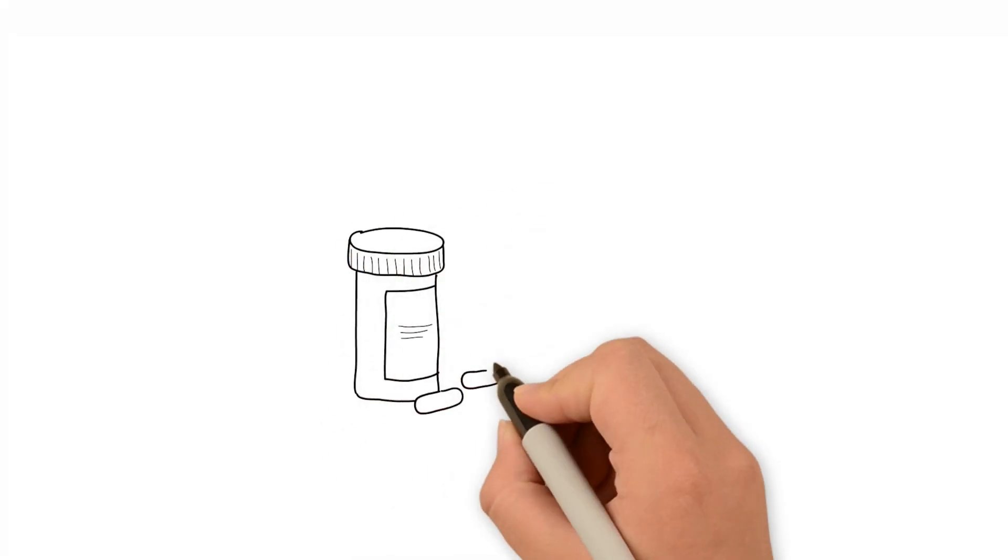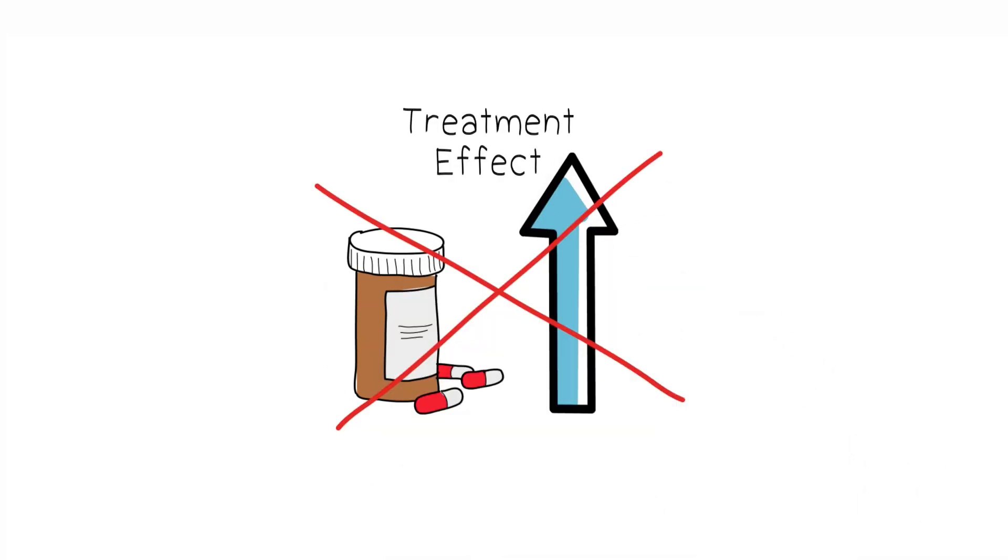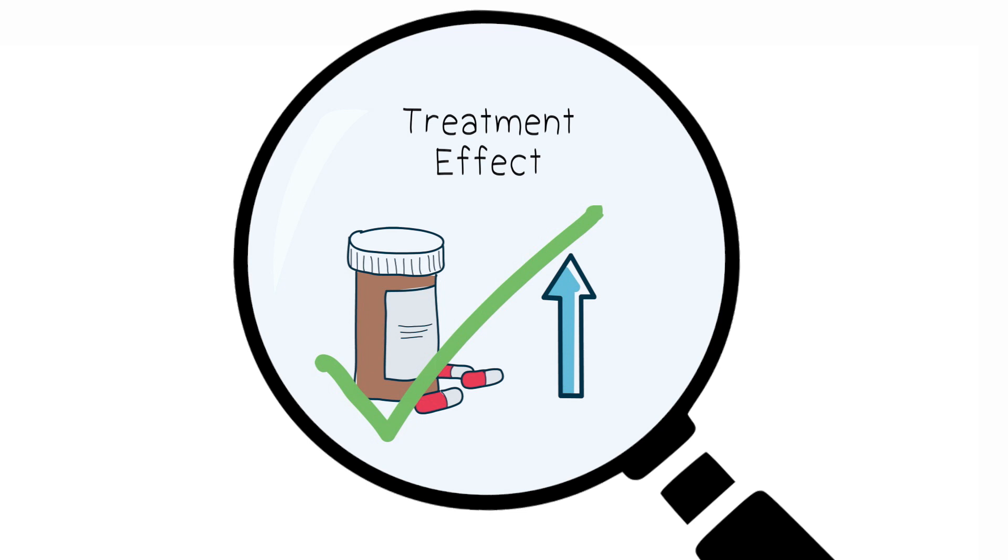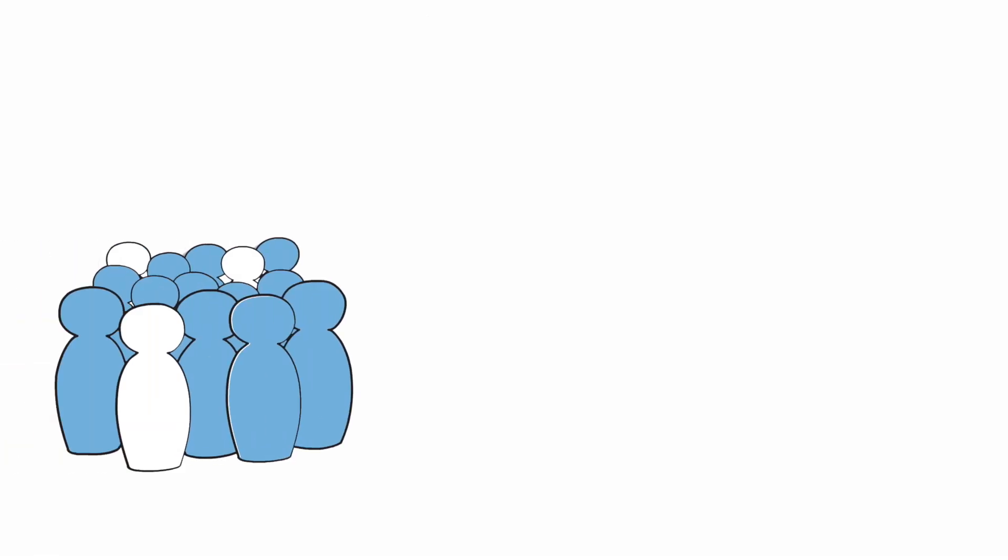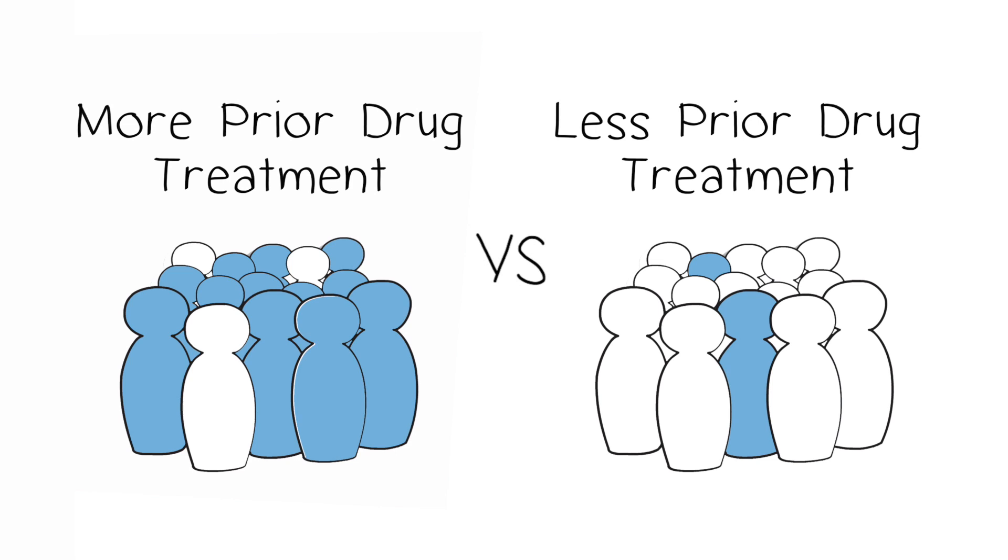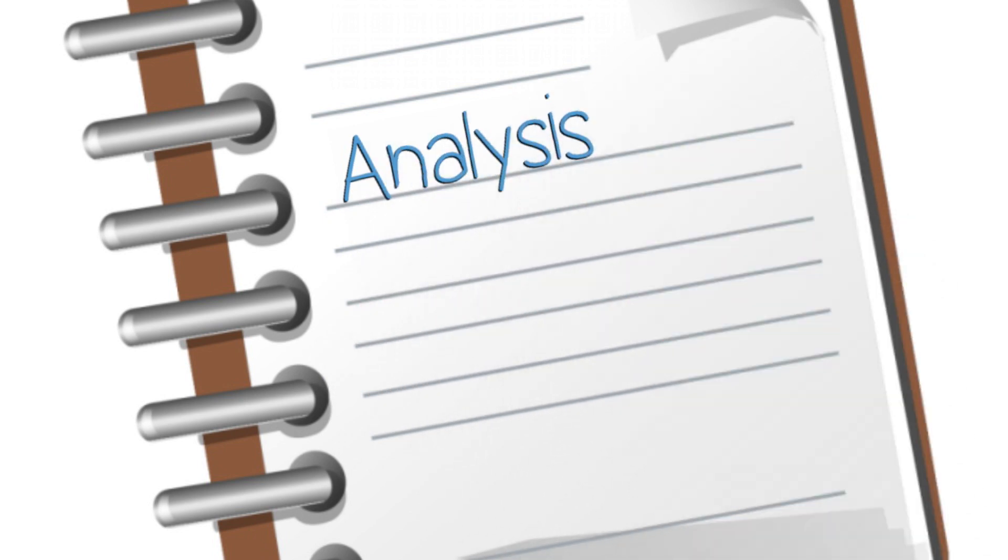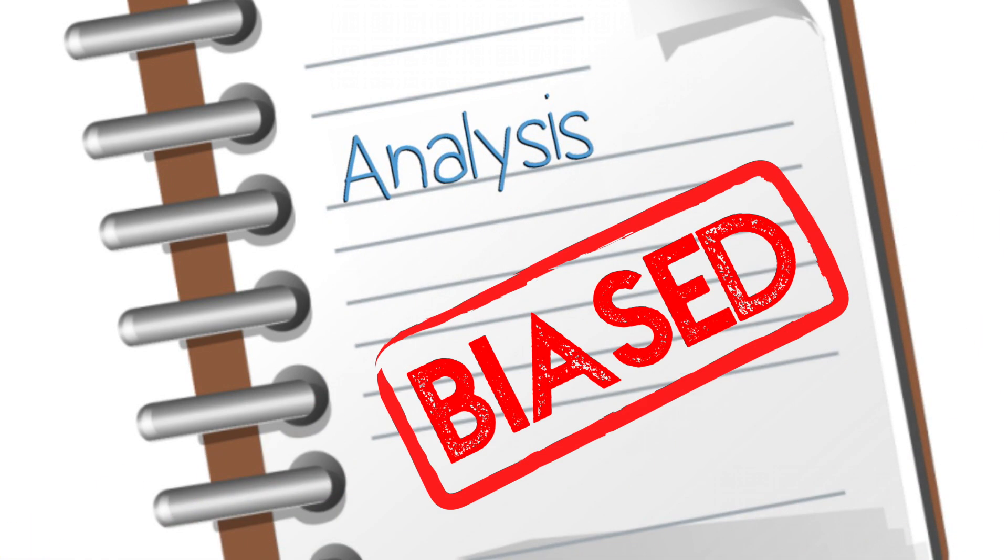If we don't control for it, the difference in placebo response may influence our estimates of the benefit of the active treatment, especially when the treatment is compared to trials of other drugs with a previously untreated population that is more likely to experience a placebo response. If we don't adjust our analysis to account for these factors, we'll end up with biased results.